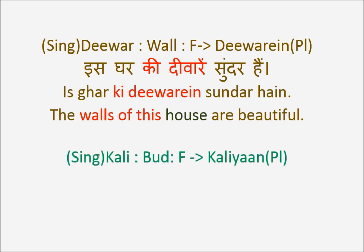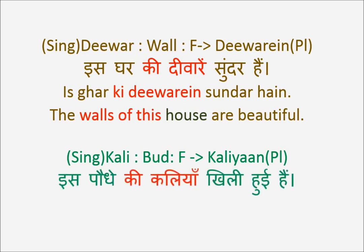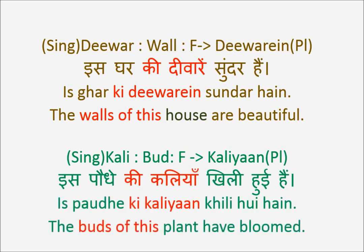On similar lines, Kali is bud — Kali singular, Kaliya plural. Is Paudhe Ki Kaliya Khili Hoi Hai — the buds of this plant have bloomed. Paudha is plant; Khila means to bloom. So Is Paudhe Ki Kaliya — Ghar Ki Diwaare, Paudhe Ki Kaliya — Ki remains Ki in feminine.